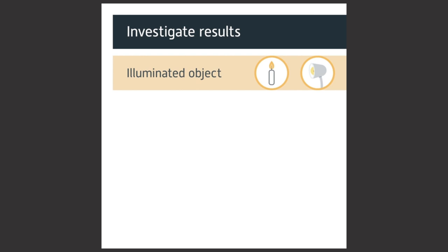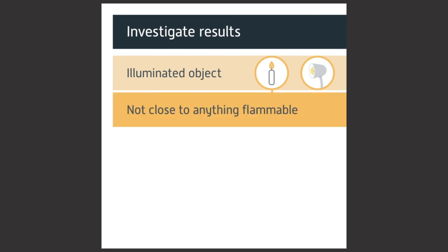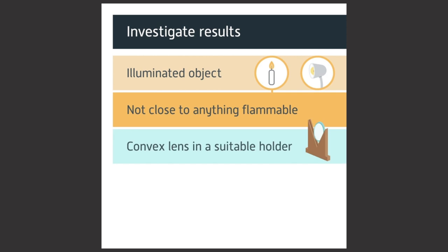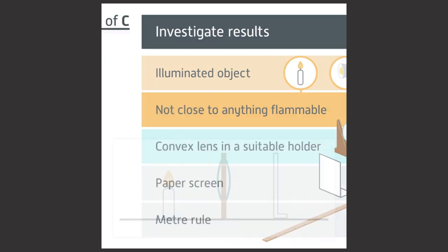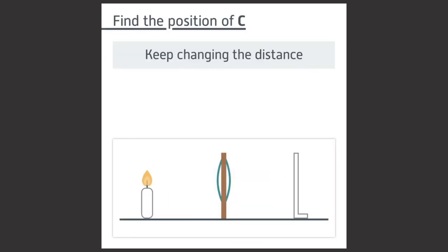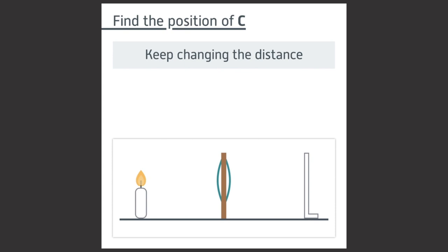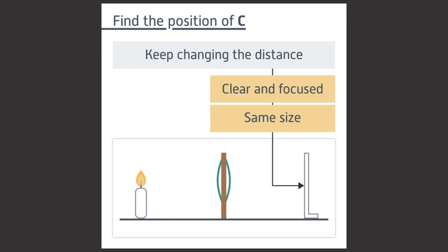You can investigate these results using an illuminated object such as a candle or small lamp — if you use a candle, make sure it's not close to anything flammable. You also need a convex lens in a suitable holder, a paper screen, and a meter rule. To find the position of C, keep changing the distance between the object and the screen until you get a clear, focused image the same size as the object.